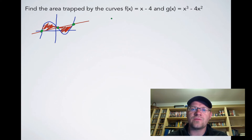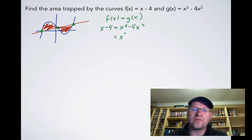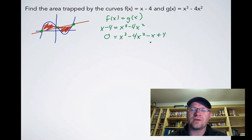To find the intersections, we set f of x equal to g of x: x minus 4 equals x cubed minus 4x squared. Moving everything to one side gives x cubed minus 4x squared minus x plus 4 equals zero. Now we need to factor this expression.